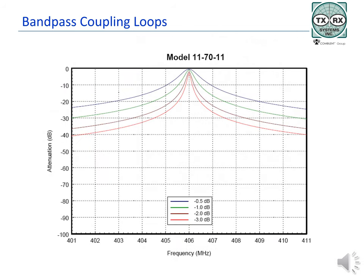The graph shown is a network analyzer sweep of the frequency response of the bandpass loops in an 117011 cavity. Beginning at the topmost blue curve, the loop is set for half a dB of insertion loss at the center frequency of 406 MHz. At 1 MHz away, at either 405 or 407 MHz, signals going through the cavity would be attenuated by 10 dB, while the main carrier is attenuated half a dB due to the insertion loss of the cavity. Further away, at 3 MHz on either side of 406, the cavity response graph shows 20 dB of rejection of signals at 403 and 409 MHz. If more isolation was needed, the loops could be set for higher insertion loss.